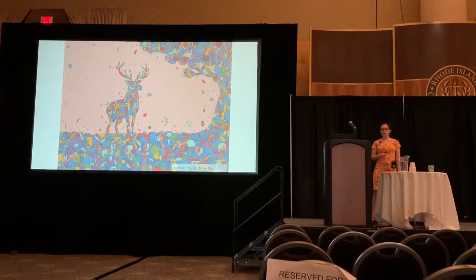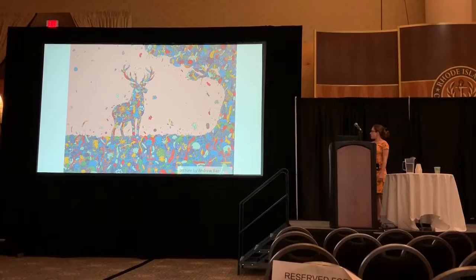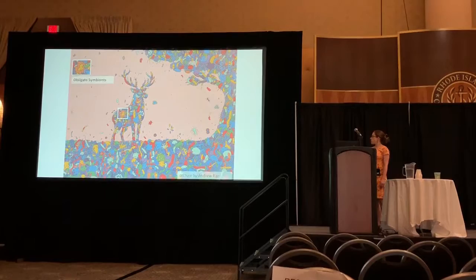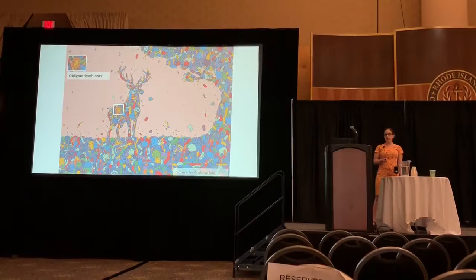We first looked at these obligate microbes. Here in this deer there's a symbiont that's not anywhere else in the picture — it's a deer-specific symbiont. We call those obligates, and we tend to think that those are pretty aligned in terms of fitness interests with their hosts, although that may not be true.